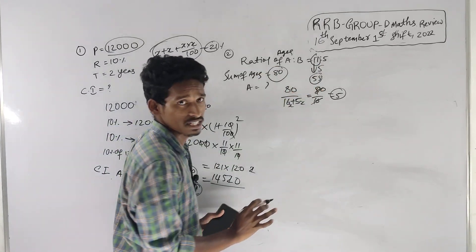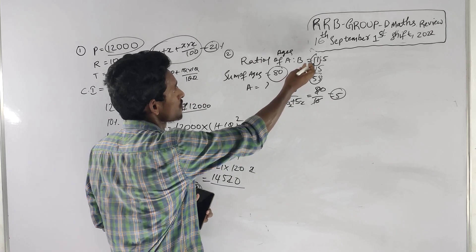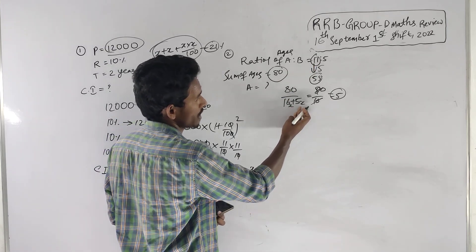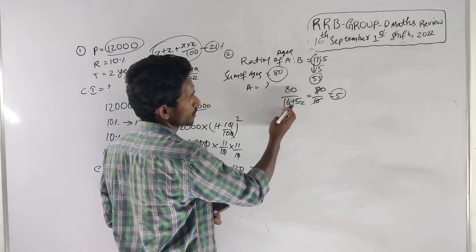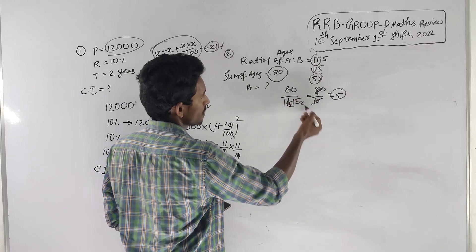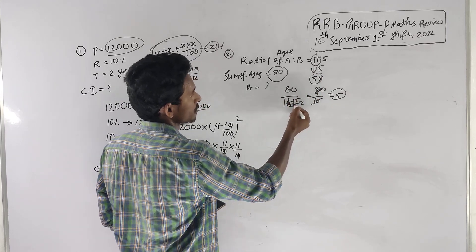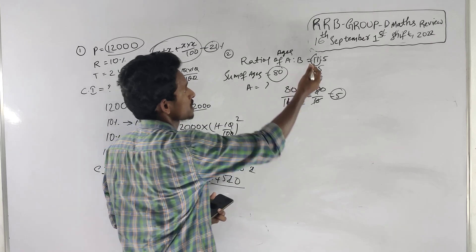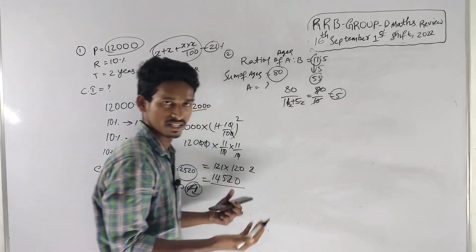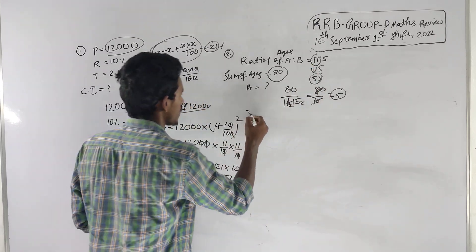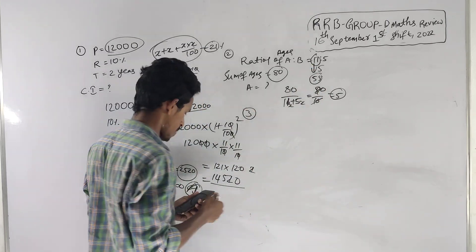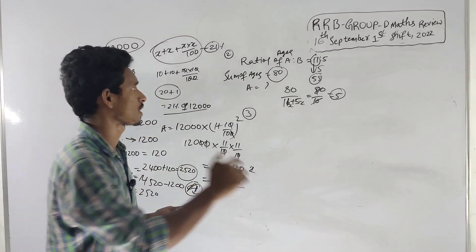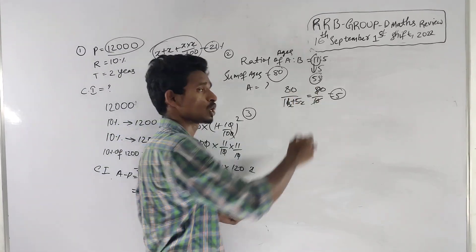We divide the number into 11 parts and 5 parts. The total parts is 11 plus 5 equals 16. Each part is 80 divided by 16, which equals 5. So the 11 parts gives 55. Simple question — if you have multiple options, check by this method.